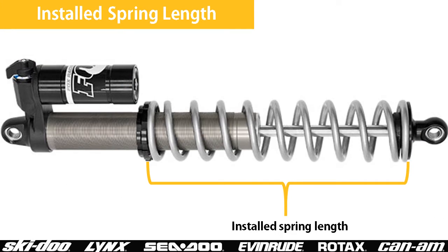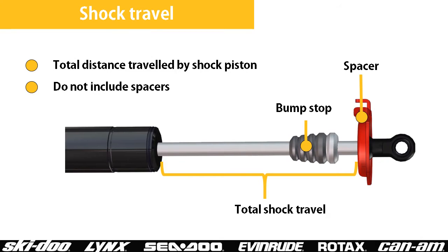The installed spring length is measured when the shock is assembled, but not on the vehicle. The springs should not be loose, meaning that at least the minimum spring preload is applied. The shock travel is the exposed length of the shaft, including the bump stop, when the shock is fully extended. It may be easiest to measure before you install the spring.